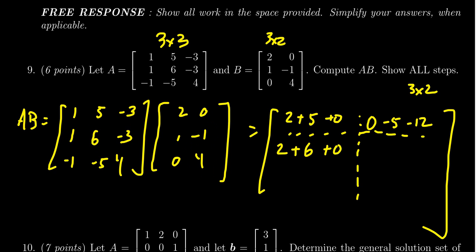For row two times column two we get one times zero which is zero, plus six times negative one which is negative six, minus three times four which is negative twelve again. Then we move on to the last row.